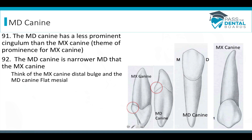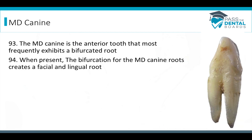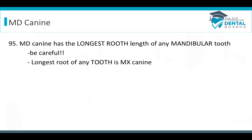The mandibular canine has a less prominent cingulum than the maxillary canine — this follows the theme of prominence for the maxillary canine. The mandibular canine is also narrower than the maxillary canine; the distal bulge on the maxillary makes it much wider. The mandibular canine is the anterior tooth most likely to exhibit a bifurcated root, and when present, it divides into a facial root and a lingual root. The mandibular canine has the longest root length of any mandibular tooth.